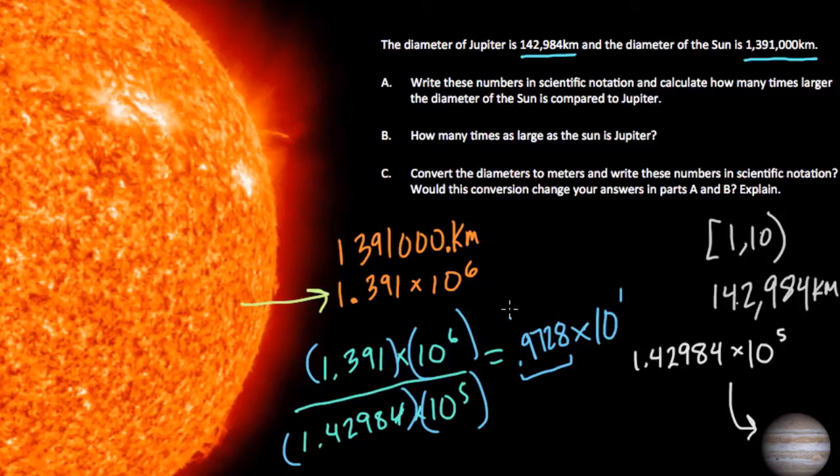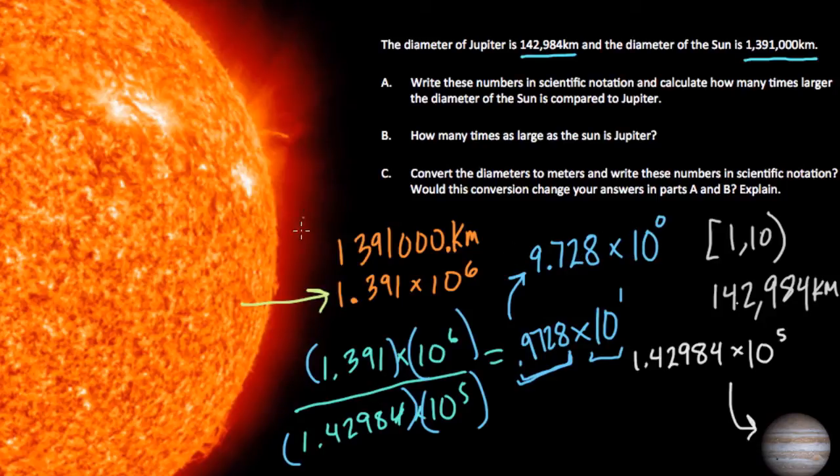So what do we do? Well, I'm going to multiply this first number by 10 to make it a number between 1 and 10. I multiply it by 10, my decimal is once to the right, and I get 9.728. But again, you don't want to change the number. If this number became 10 times larger, this number should be 10 times smaller. So there we get 10 to the 0. This tells us that the Sun is about 9.728, almost 10 times larger in diameter than Jupiter.